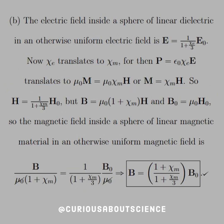For part B, the electric field inside a sphere of a linear dielectric in an otherwise uniform electric field was given as E equals 1 over (1 + χₑ/3) times E₀. Now, χₑ translates to χₘ, and the polarization P equals ε₀χₑE translates to μ₀M equals μ₀χₘH, or after canceling the μ₀'s, M equals χₘH. So translating through, we get H equals 1 over (1 + χₘ/3) times H₀.